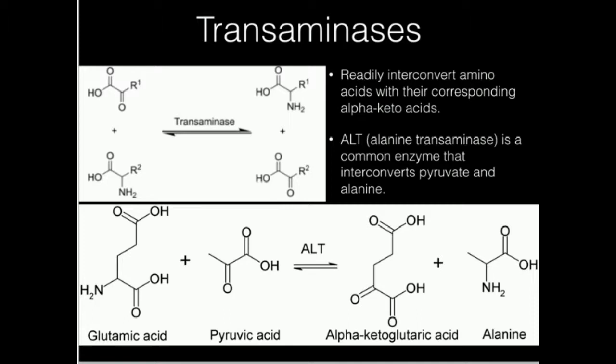Notice it has an amine right here. Pyruvate, or pyruvic acid, has a carbonyl right here, a double bond oxygen. This particular enzyme, alanine transaminase, is going to take this carbonyl and put an amine there, and take this amine and put a carbonyl there.